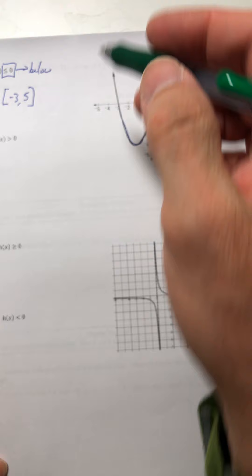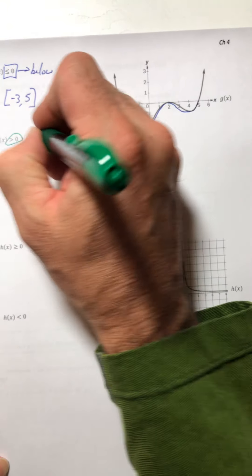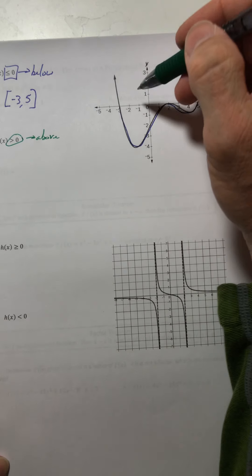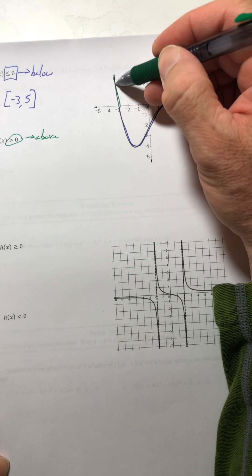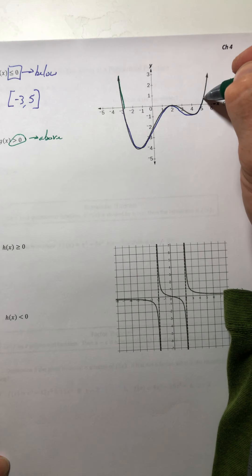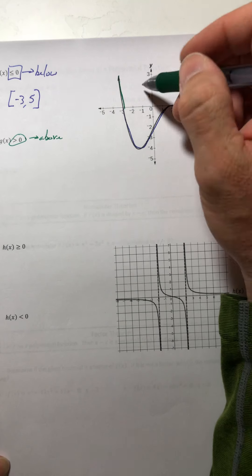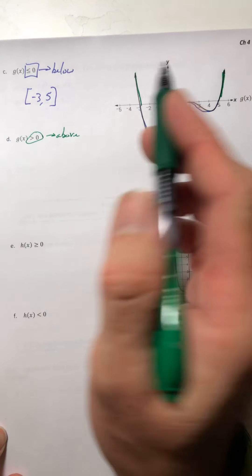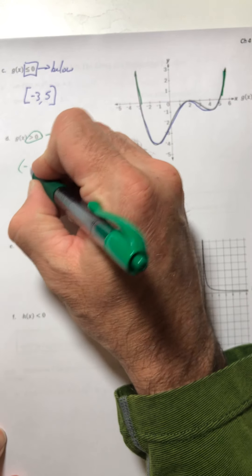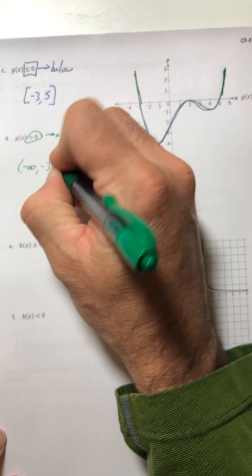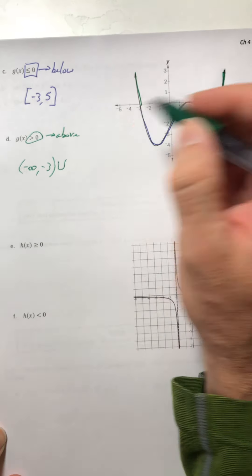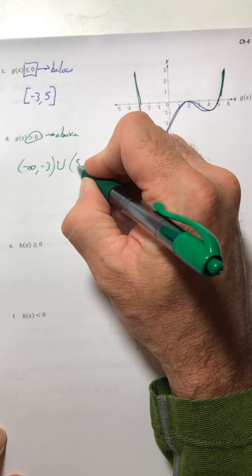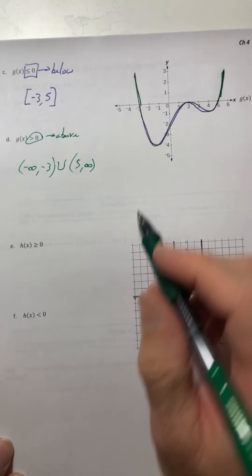All right, part d, now I want where it's above. So that would be this section here, and this section here. So the two ends. So on the first end, it's negative three down to negative infinity. And then the other one starts at five and keeps going. So five through infinity.